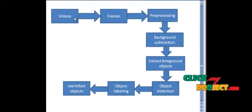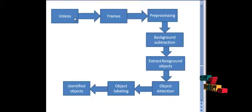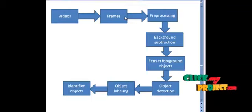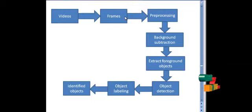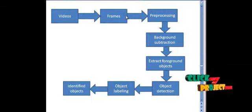Let me see the flow of the process — pedestrian detection based on blob motion statistics. First, the input video is converted into frames. This is done by measuring the frame height and width and splitting the video based on the measured height and width. Then, the input frames are pre-processed.